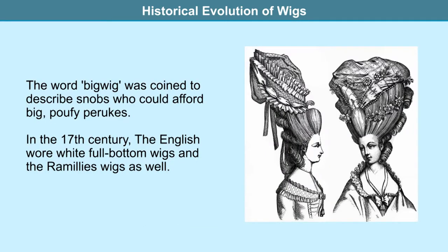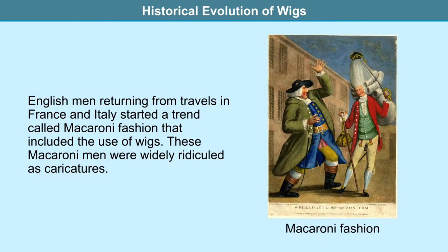The term 'big wig' was coined in this period to describe snobs who could afford such big, puffy peruques. In the 17th century, the English wore full bottom wigs and Ramillie's wigs. The Ramillie's wig featured sausage roll curls at each ear with the remaining hair tied at the back of the neck with a black ribbon — a version of pigtail wigs also known as campaign wigs. You might recollect seeing these wigs in old movies about the British invasion of India or in portraits depicting British aristocracy.